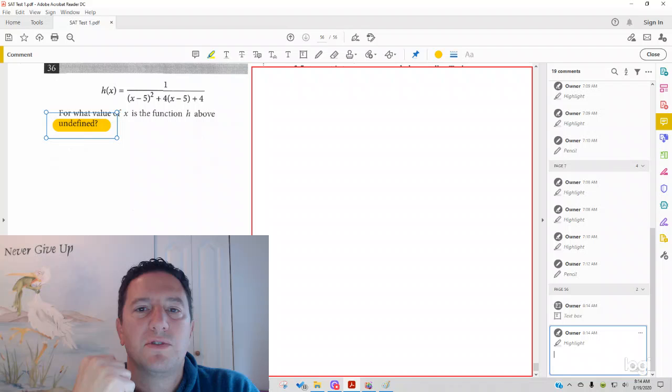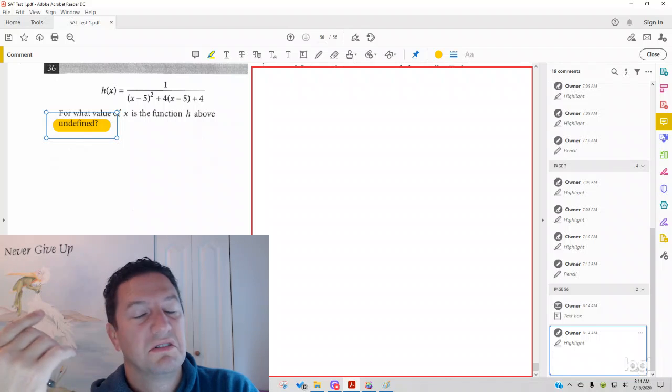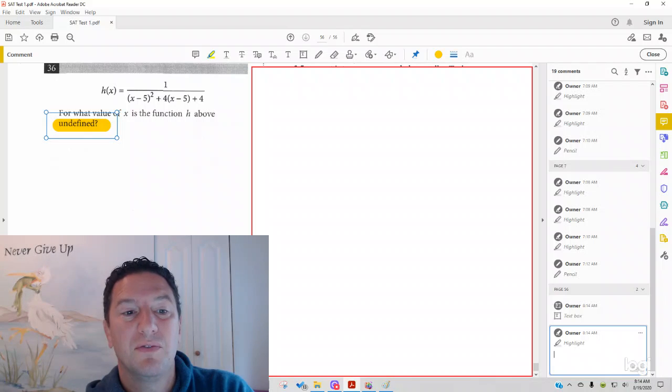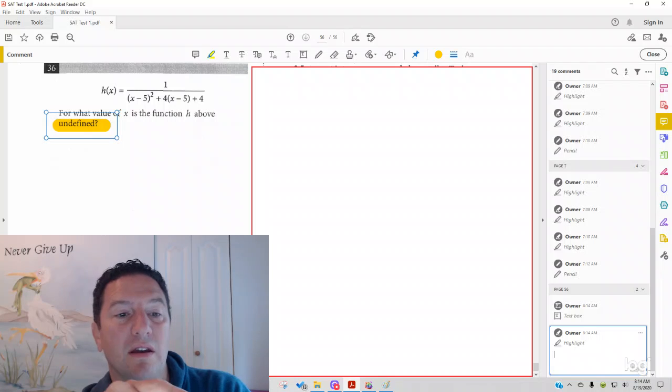Typically there's three categories of students. One who looks at this and doesn't have any idea how to do it. Another is, oh, I know that the bottom of the fraction has to be 0 if it's undefined. So they look at it and say, oh, it's 5.